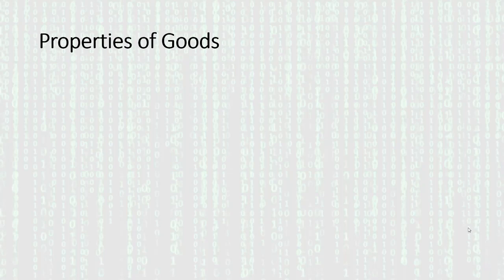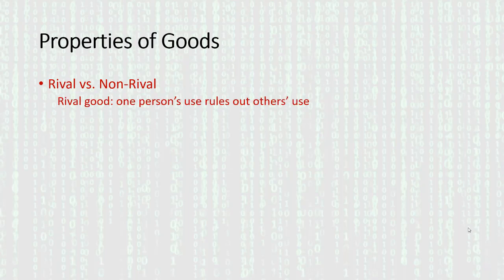There are two dimensions of analysis here. The first is whether goods are rival or non-rival. A rival good means that one person's use of the good rules out another person's use — so if I'm using it, you can't use it. A good example here would be my car.